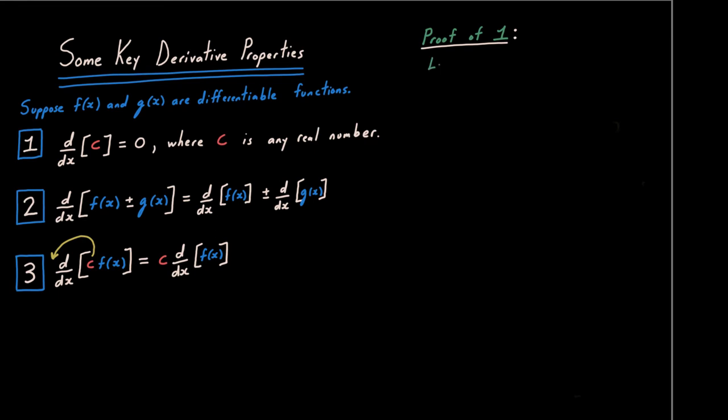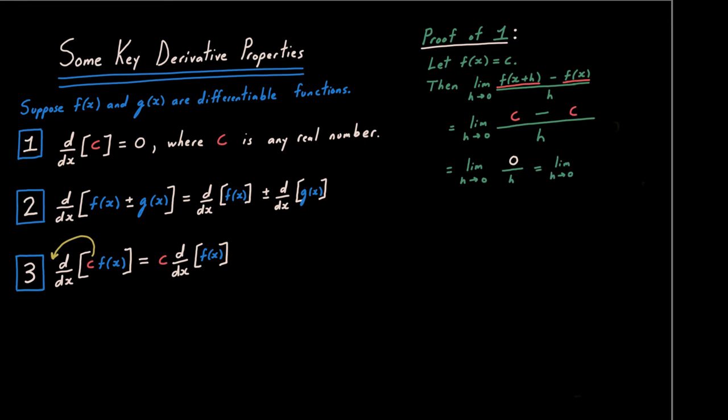Let's prove property one rigorously using the limit definition. Let f(x) = c. Applying the limit definition, f(x+h) and f(x) are both c, giving us (c − c)/h = 0/h, and the limit of 0 is 0. Done — that's a rigorous proof of property one.